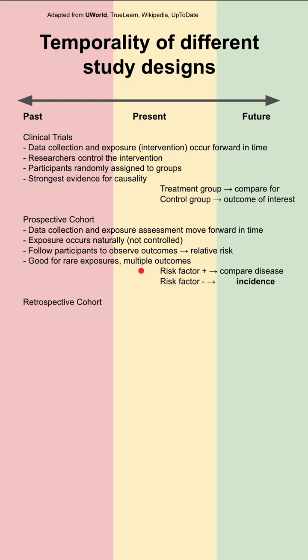In prospective cohort studies, you start with patients that have a risk factor and patients that don't, and you compare disease incidence. You end up with an incidence and a relative risk.